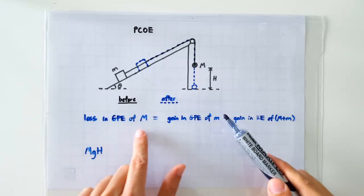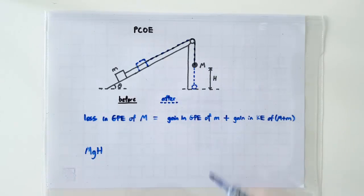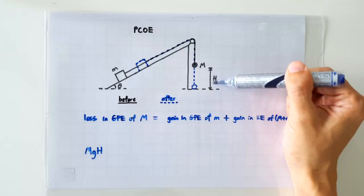Let's now put in some formula. The loss in GPE of the lead ball is of course MGH, where H is the vertical height.